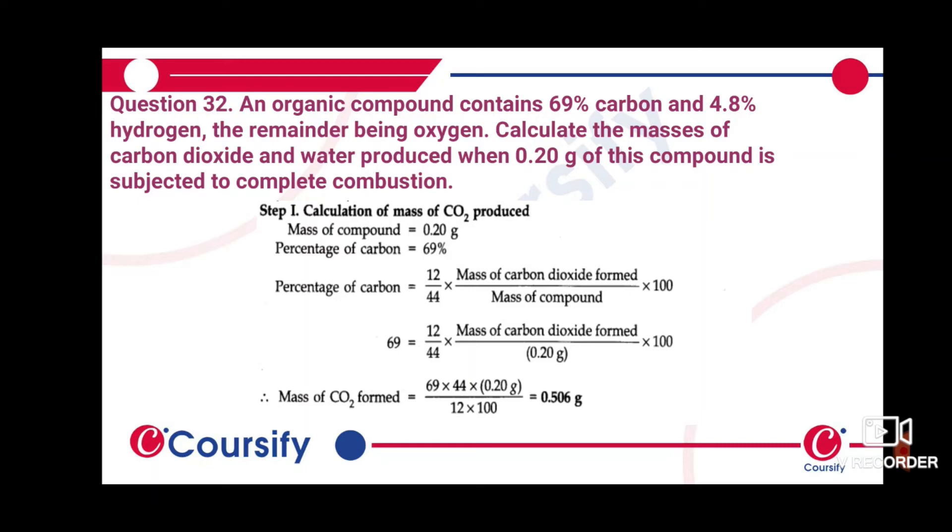Mass of the carbon dioxide formed we do not know. Mass of the compound is known, and the percentage of carbon is known as 69. So the mass of carbon dioxide formed is equal to 0.506 gram. This is the first step in which we calculate the mass of carbon dioxide.